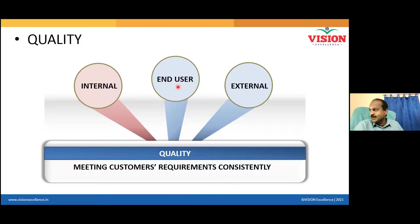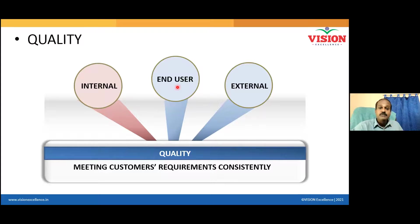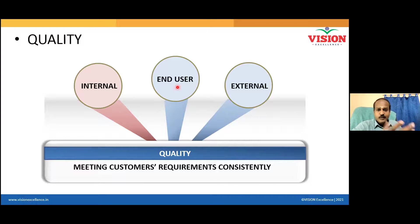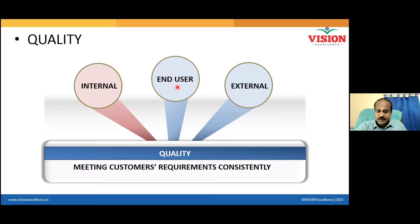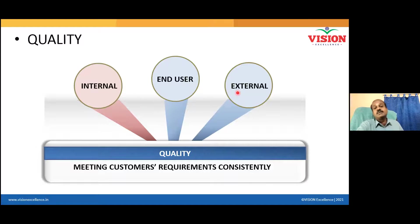Don't just think about the end user. There are several people who receive your product before it reaches the end user — people who receive your assembly, people who receive your components. The hard disk is received by someone, the processor is received by someone — that someone is a customer. For a product, customers can be internal or external, and some are end users.